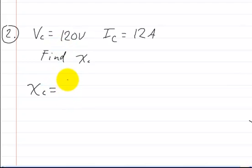Here we have 120 volts, and that's going to be divided by the current, which is 12 amps, which is going to leave you with just 10 ohms. And that's how you would use that formula.